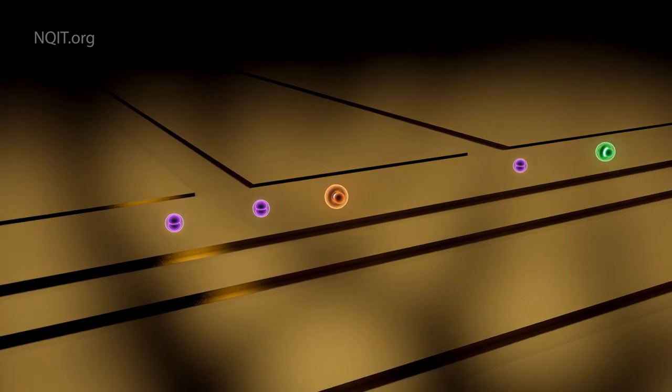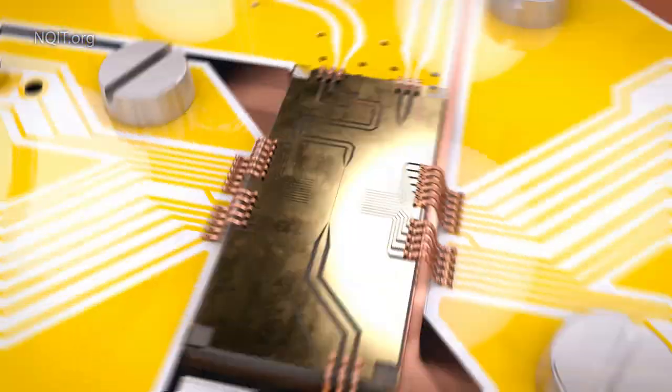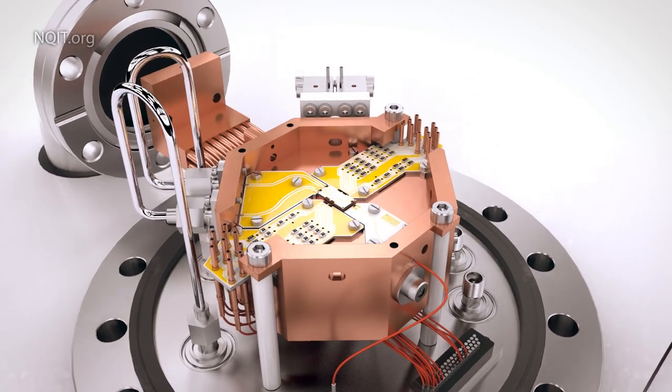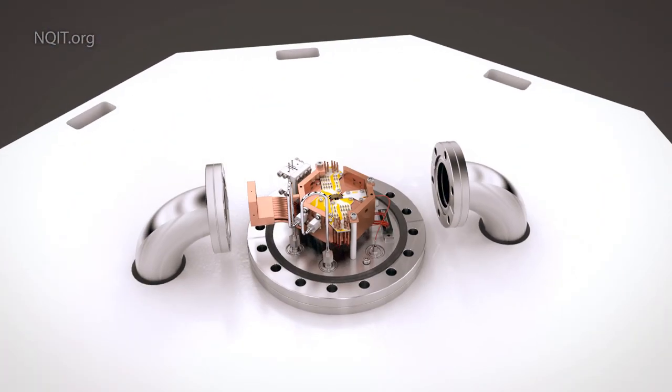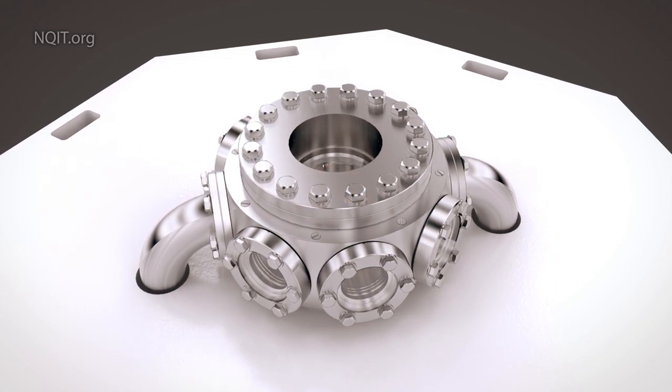Zooming out further we see the gold strips are part of a small chip called an ion trap, and then we see surrounding electrical and cooling systems. A final zoom reveals the entire system is encased in a vacuum chamber which protects it from the atmosphere.